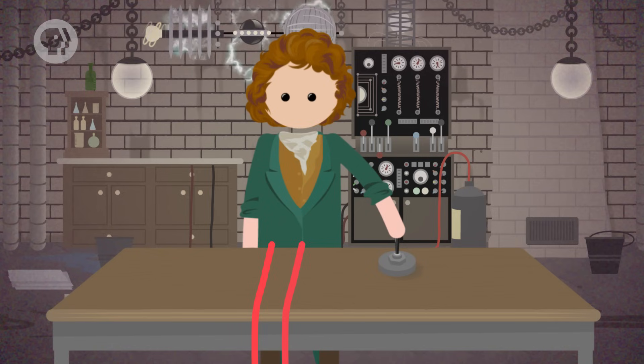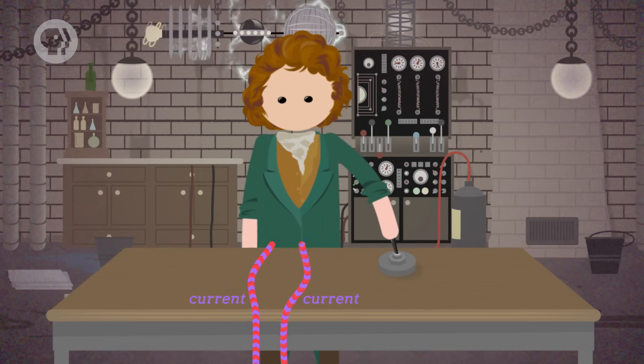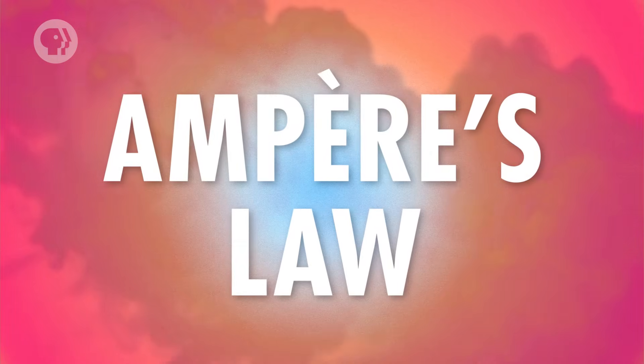He took two parallel wires and ran a current through both of them in the same direction, and the wires attracted each other. And when he ran a current through both wires in the opposite directions, the wires repelled each other. Studying the strange force between the wires led Ampère to discover one of the most fundamental laws of electromagnetism – what we now call Ampère's law.